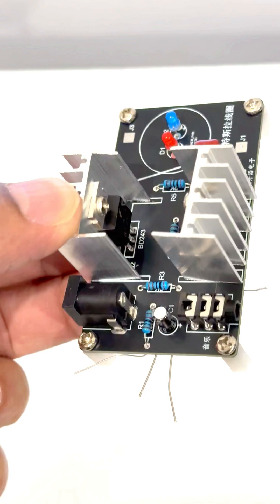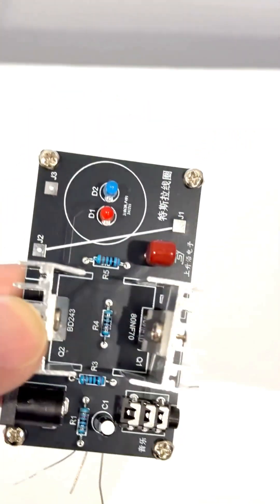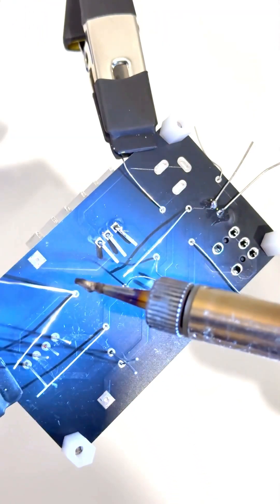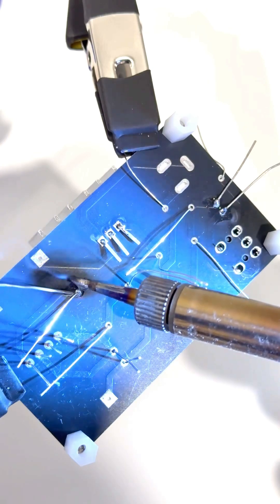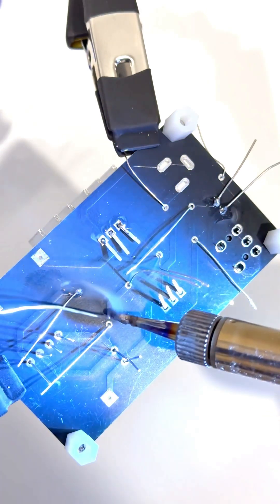Start by soldering all components to the printed circuit board. Then, glue the Tesla coil to the printed circuit board. Then, carefully connect it to a 24V power supply.